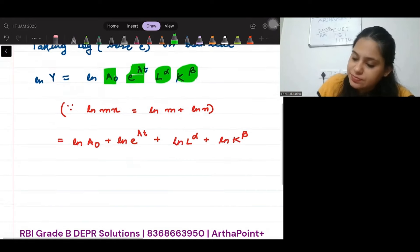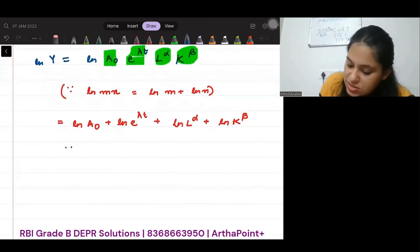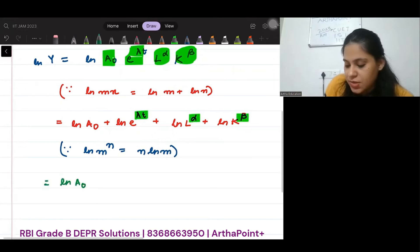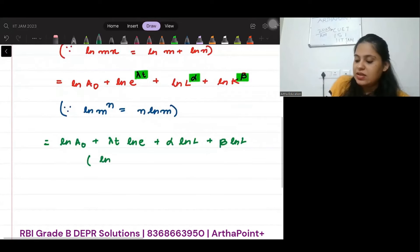Now what's the next step? Since ln(m^n) is n ln m, what we can do is bring these powers down. So you will get ln A0 plus λt ln e plus α ln L plus β ln K. What is ln e? ln e is 1.